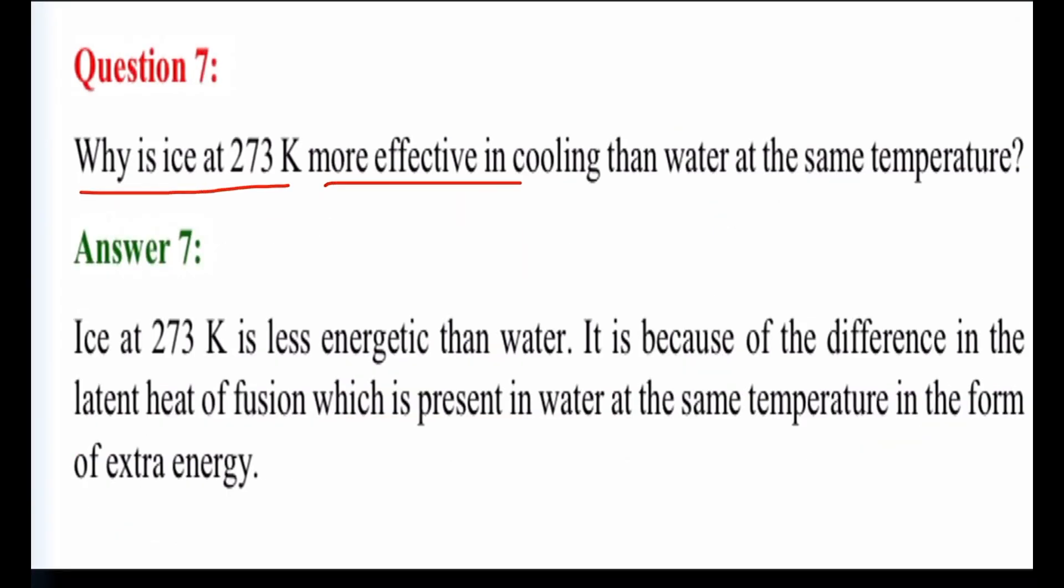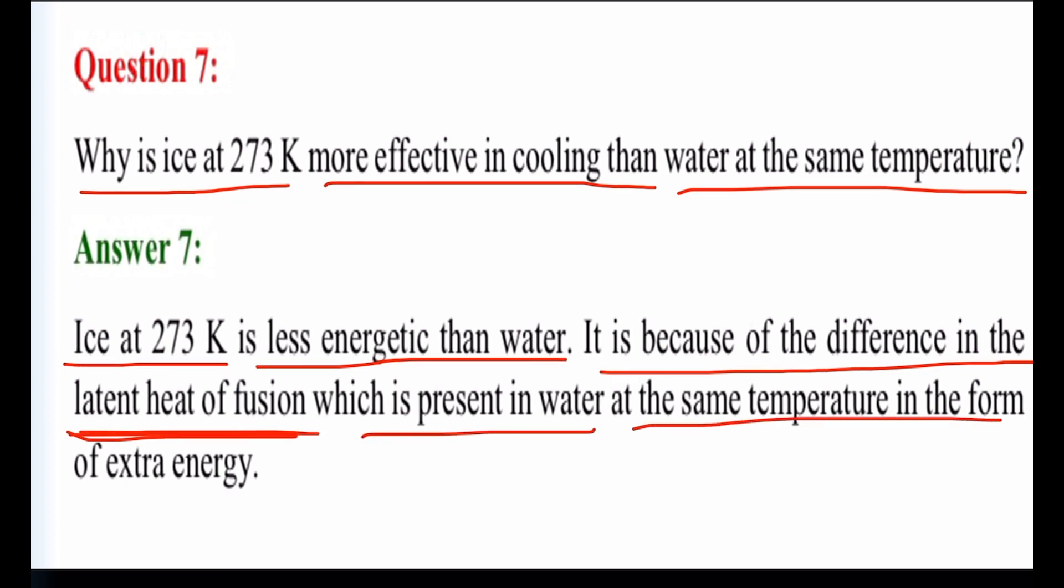Next is question number 7. Why is ice at 273 Kelvin more effective in cooling than water at the same temperature? Ice at 273 Kelvin is less energetic than water. It is because of the difference in the latent heat of fusion which is present in water at the same temperature in the form of extra energy.